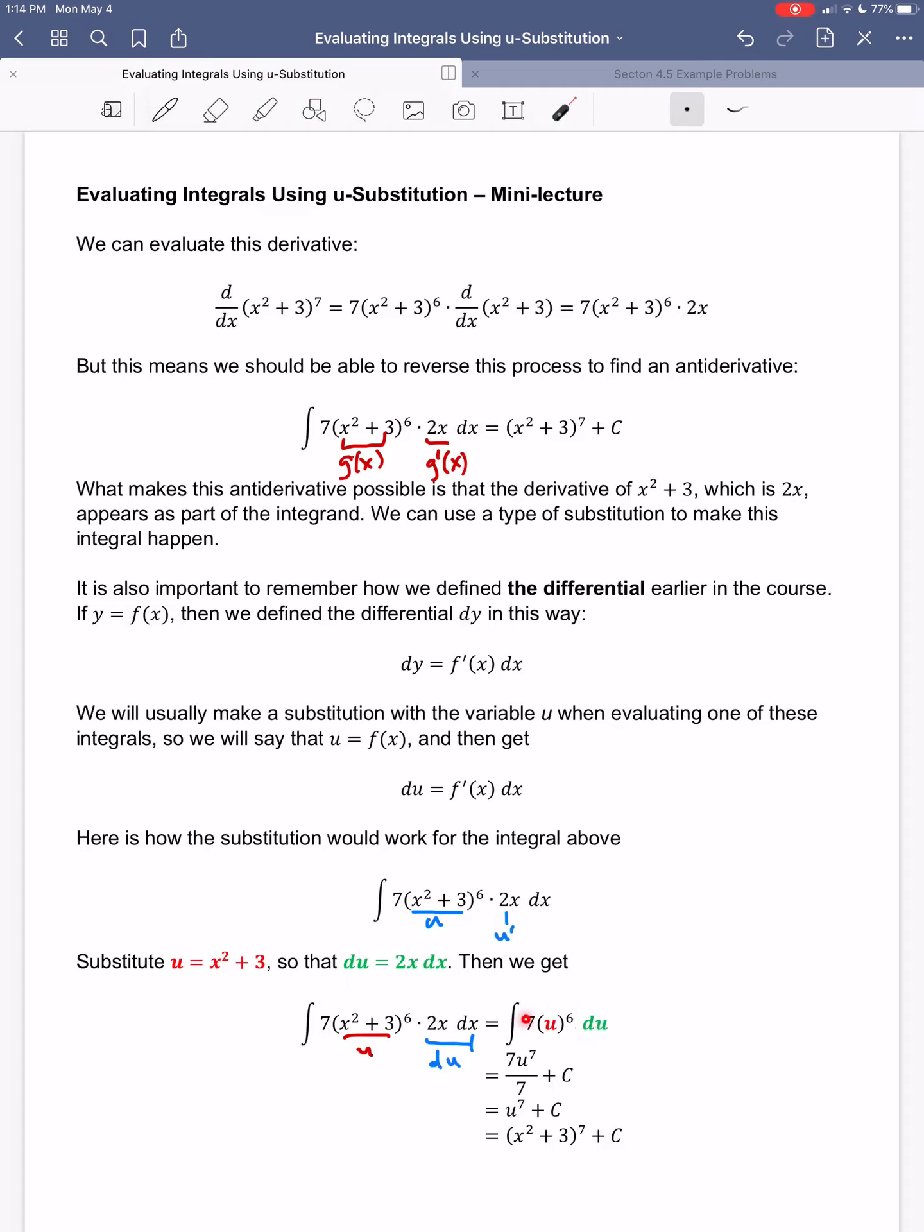But now, how do I take the antiderivative of 7 times u to the 6th? Well, I just go 7 times u to the 7th, and then I divide by the new power. 7 over 7 is 1. But the thing is, u was not originally part of this problem, and my little joke with this is nobody cares about u.